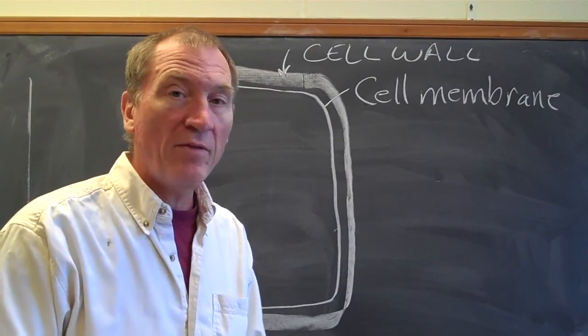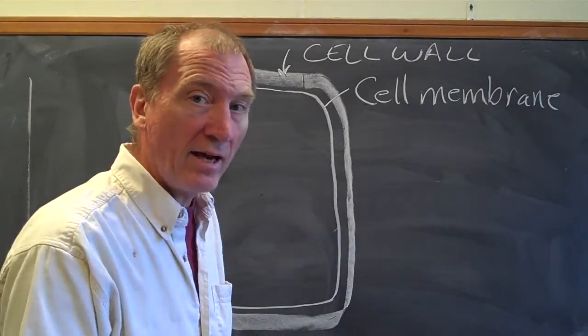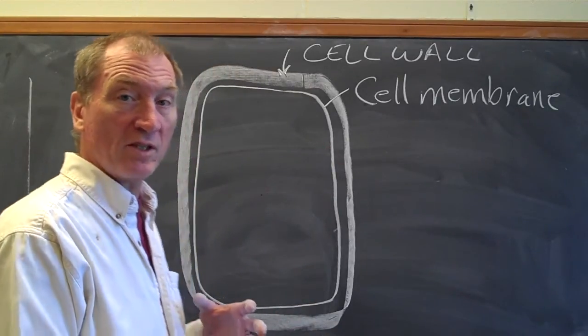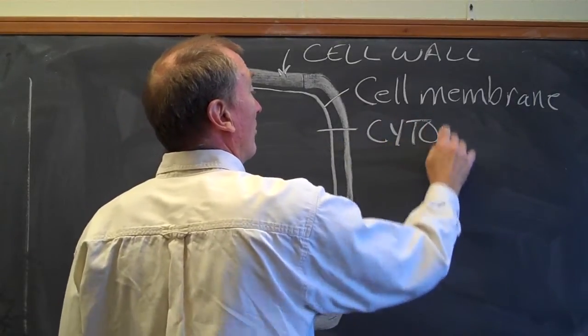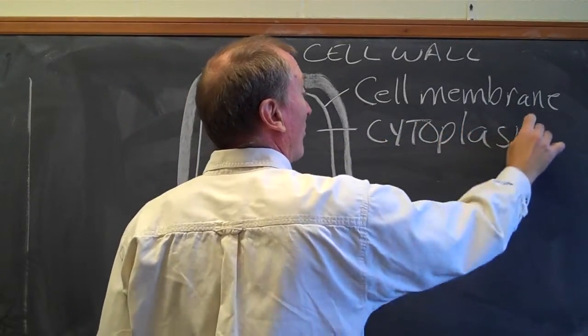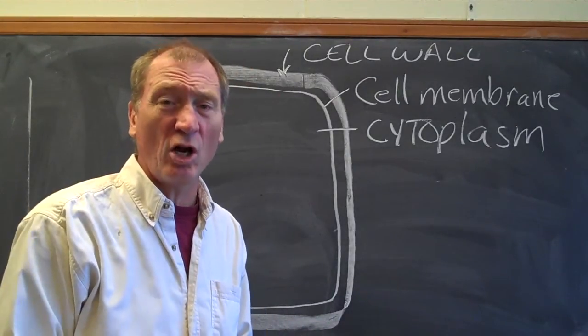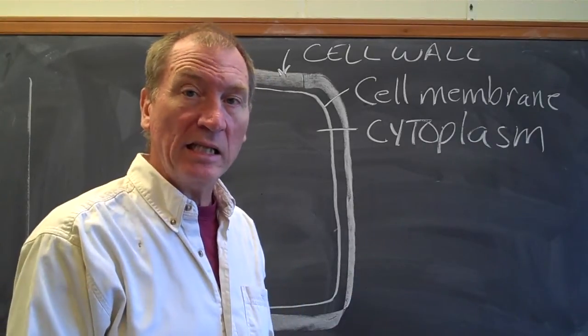Remember I said that the cell has a lot of liquid, a lot of water inside it, and that fluid inside the cell is called the cytoplasm. It can also be called the protoplasm, but I tend to call it the cytoplasm in this course. So it's the goop inside the cell.